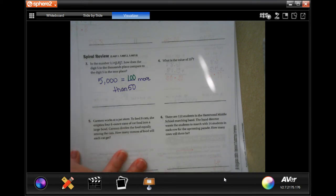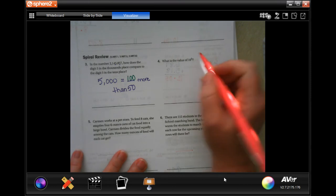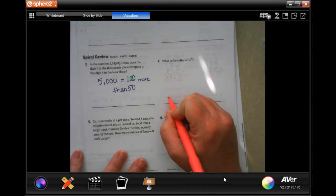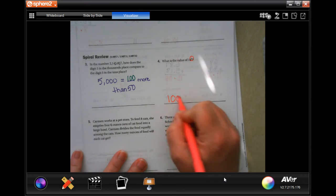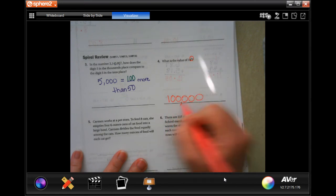All right. What is the value of 10 to the fifth? Well, that's the fun part, because 10 to the fifth just means we're going to have five zeros. One, two, three, four, five, 100,000.